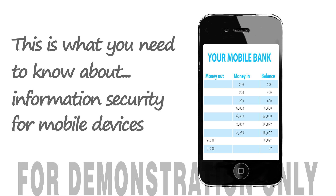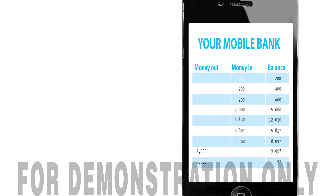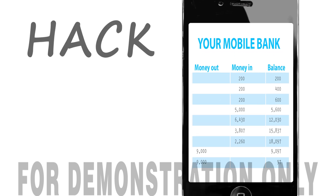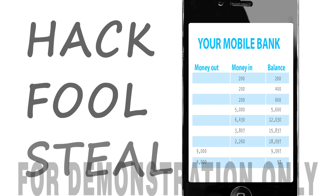How do criminals access our information? There are three main ways. The first is by hacking into the device and extracting the information remotely. The second is by fooling us into giving up the information. And the third is by stealing the device itself.